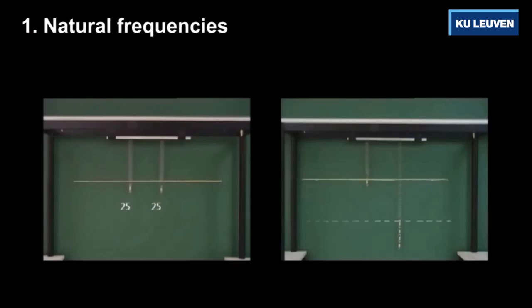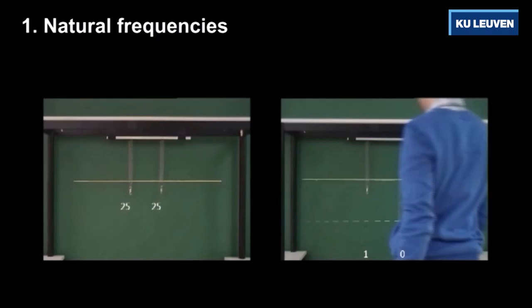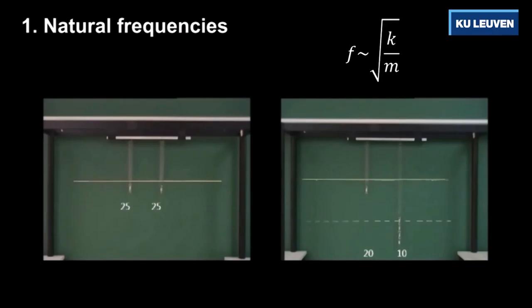I think you can imagine that by taking a stiffer spring, the natural frequency would increase, whereas by taking a larger mass, the natural frequency will decrease. This last case is illustrated by the following movie where two times the same spring was used, but where the mass attached to the right spring is four times larger. You can now observe that the natural frequency of this system has reduced by a factor of two.